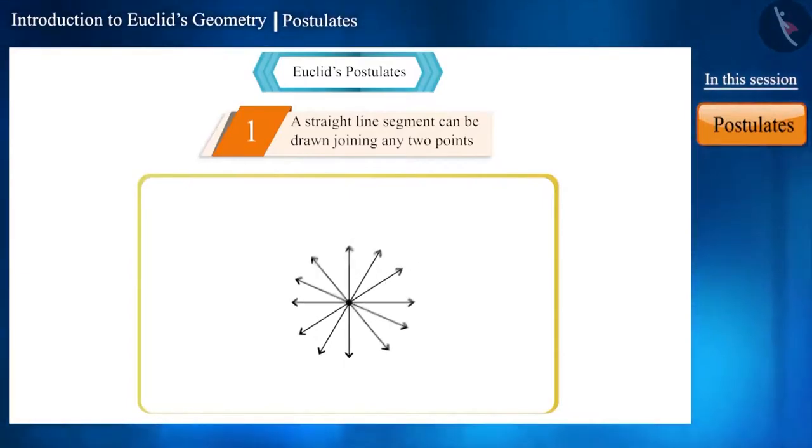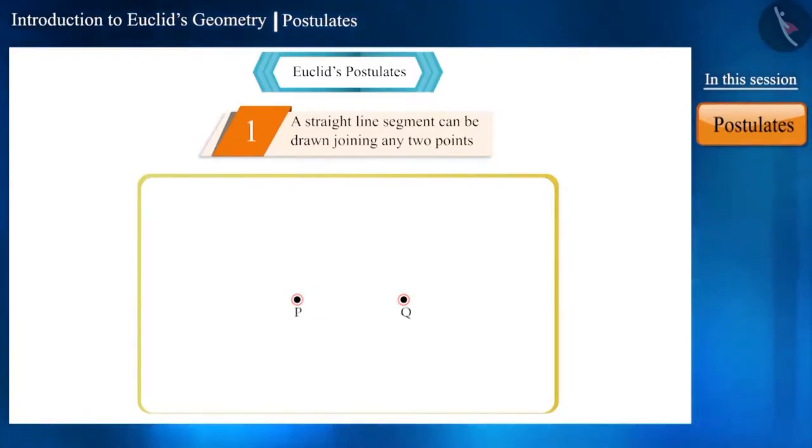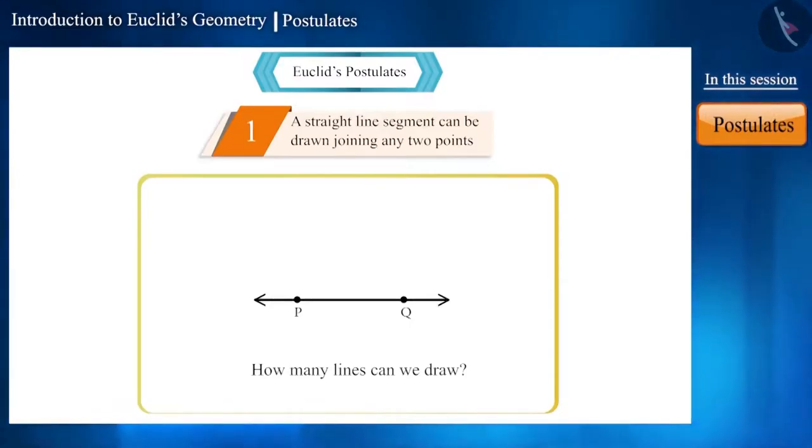Now, we will follow the same process with two points. That is, we will draw lines that pass through these two points. Now, can you tell how many such lines we can draw? Friends, only one straight line can be drawn through two points.